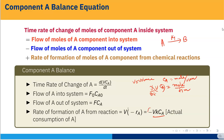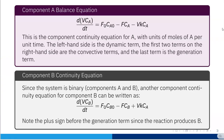Plugging all terms together, the component A continuity equation is: d(V·CA)/dt = F0·CA0 − F·CA − V·K·CA. This is the component continuity equation for A with units of moles of A per unit time. The left-hand side is the dynamic term, the first two terms on the right-hand side are the convective terms, and the last term is the consumption term — or negative generation term.